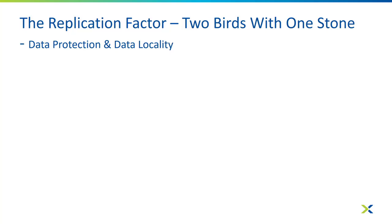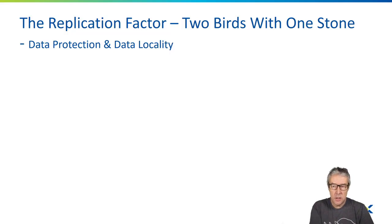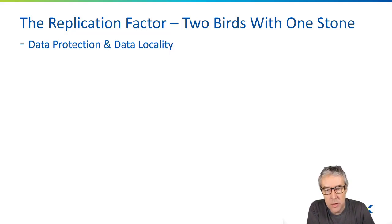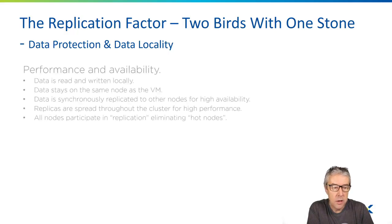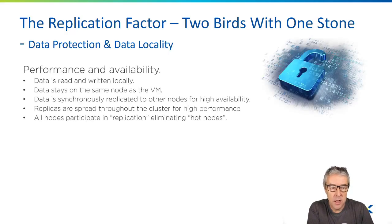In terms of architecture descriptions, we talk about a thing called a replication factor. The replication factor actually solves two challenges — two birds with one stone. We're talking about data protection and also data locality. What these two features enable are things such as performance and availability.